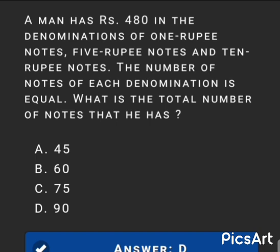Next MCQ: A man has Rs. 480 in denominations of one-rupee notes, five-rupee notes, and ten-rupee notes. The number of notes of each denomination is equal. What is the total number of notes he has? The answer is option D: 90.